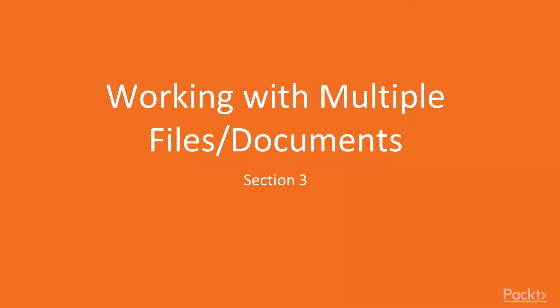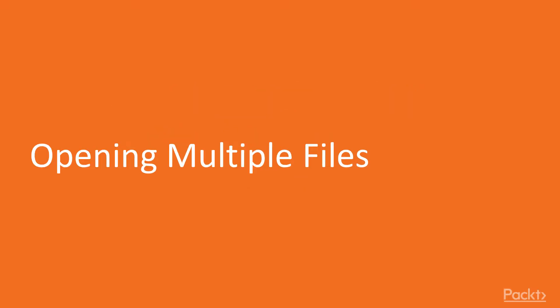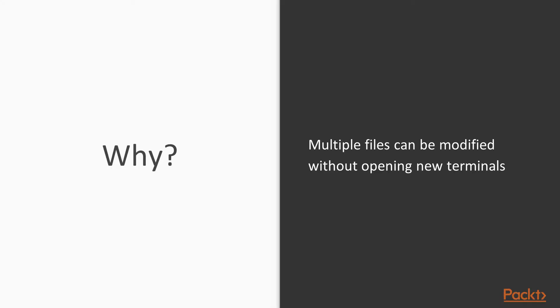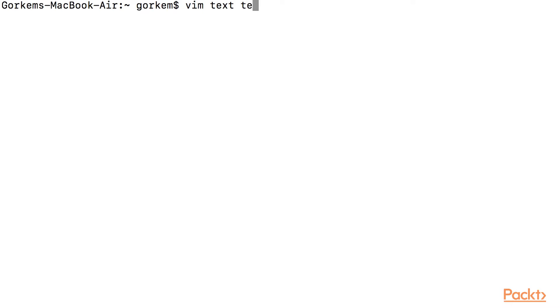Working with multiple files and documents — section 3. In this section, we are going to start working with multiple files in the Vim text editor. We need to open multiple files to increase code efficiency and modify several files in one go without opening a new terminal. We can open multiple files by typing vim followed by the first file name and then a second file name.